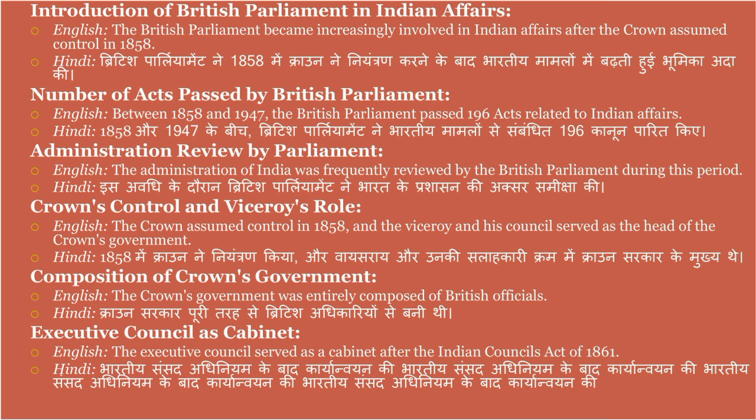The administration of India was frequently reviewed by the British Parliament during this period. Is avadhi ke doran British Parliament ne Bharat ke prashasan ki aksar samiksha ki. The crown assumed control in 1858 and the viceroy and his council served as the head of the crown's government. 1858 mein crown ne niantran kiya aur vicerai aur unki salaahkaari parishat crown sarkar ke mukhya the.